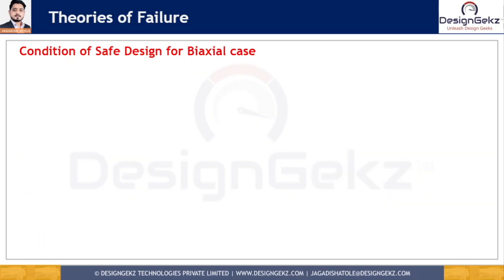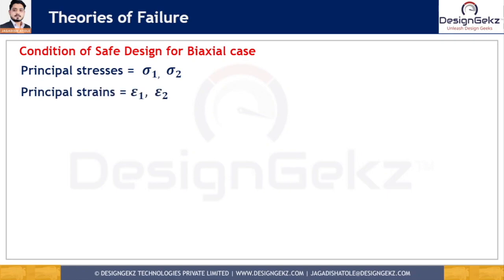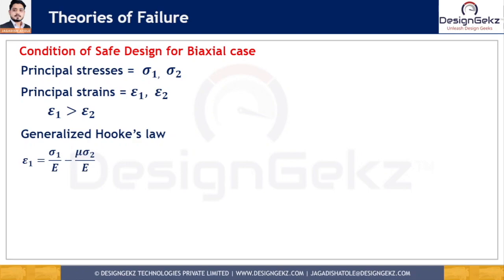For biaxial loading, the principal stresses are sigma 1 and sigma 2, and the principal strains are epsilon 1 and epsilon 2, where epsilon 1 is greater than epsilon 2. According to the generalized Hooke's law, epsilon 1 equals sigma 1 divided by E minus mu times sigma 2 divided by E. Taking 1/E as common: epsilon 1 equals (1/E) times (sigma 1 minus mu times sigma 2).